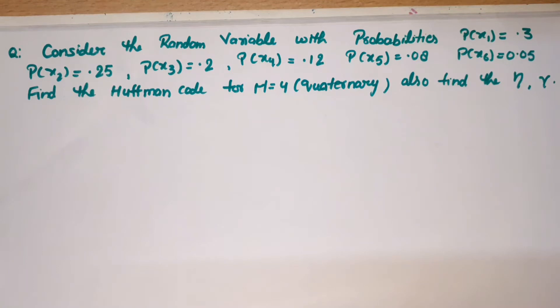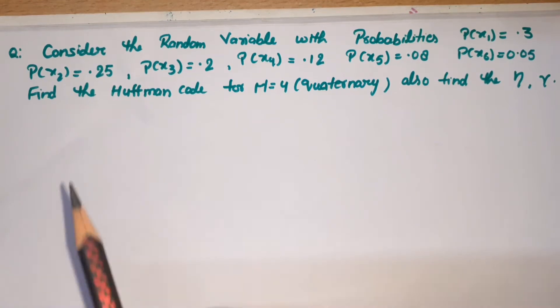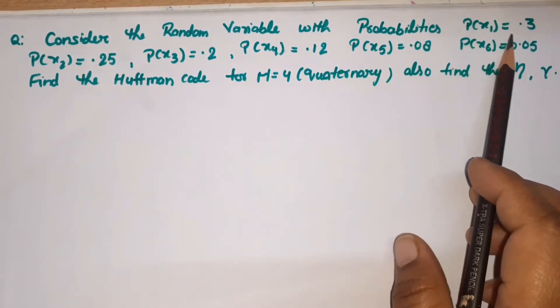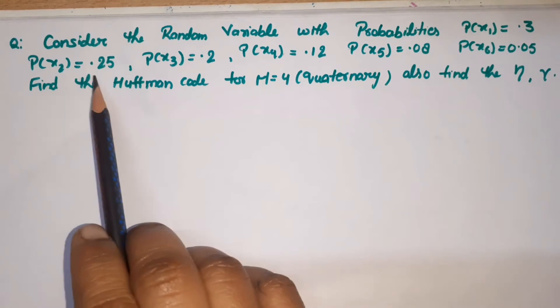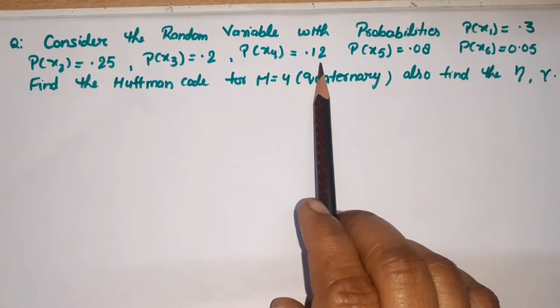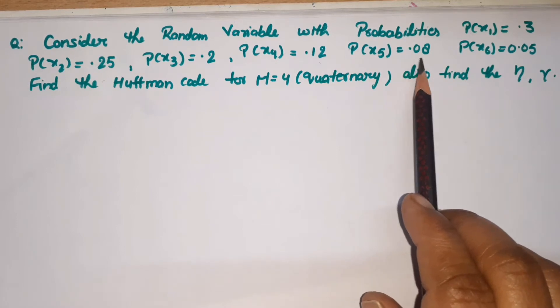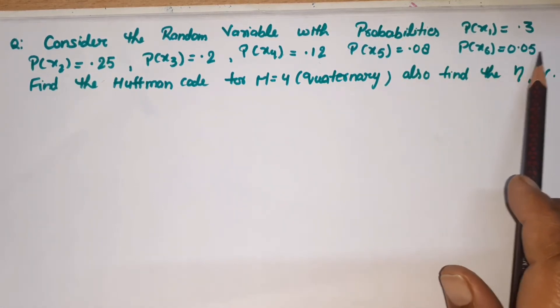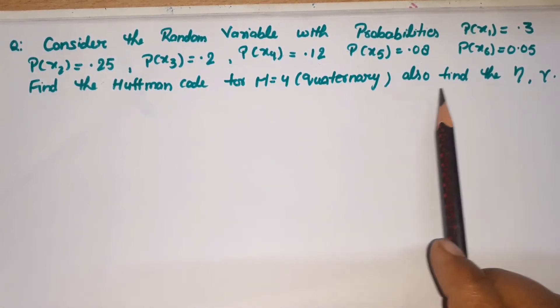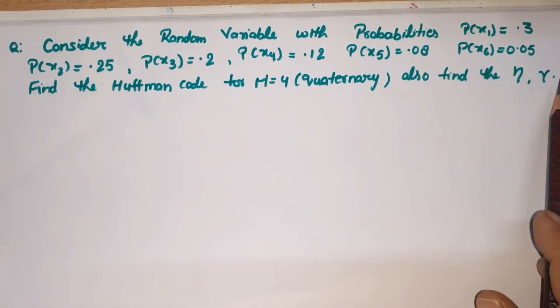In this video, I will discuss Huffman Quaternary Code for a given question. Consider the random variable with probabilities: P(x1) = 0.3, P(x2) = 0.25, P(x3) = 0.2, P(x4) = 0.12, P(x5) = 0.08, and P(x6) = 0.05. Find the Huffman Code for m = 4, also find the efficiency and redundancy.